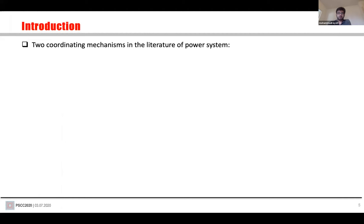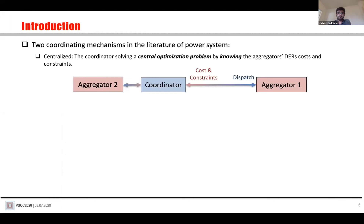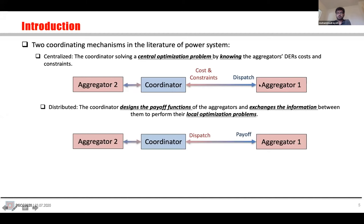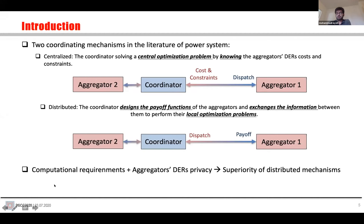There are two coordinating mechanisms in the literature. The first — centralized — is where each aggregator gives cost and constraints to the coordinator, who solves a centralized optimization problem knowing all information to find the dispatch of each aggregator. The second — distributed — is where the coordinator designs a payoff function for the aggregators, and each aggregator solves a local optimization problem to find their dispatches. The lower computational requirement of the distributed mechanism plus preserving aggregator privacy makes distributed mechanisms superior to centralized ones.